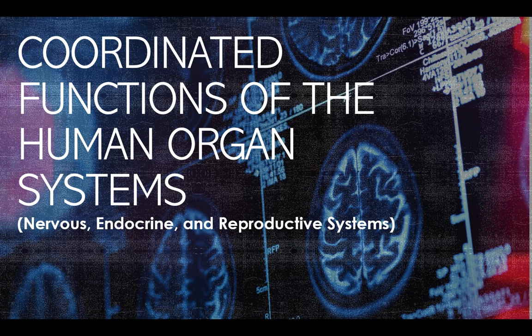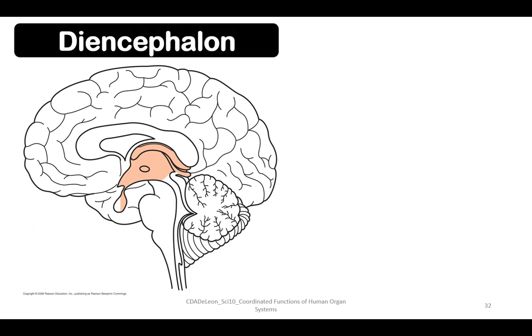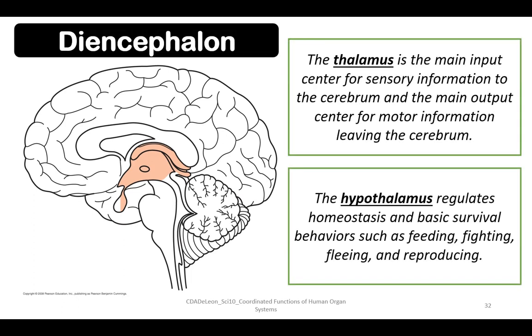Hello students and welcome to another science online class. This is video number four for the topic nervous system. We will continue our discussion about the diencephalon, which is divided into two main parts: the thalamus and the hypothalamus. The hypothalamus regulates homeostasis and basic survival behaviors such as feeding, fighting, fleeing, and reproducing.